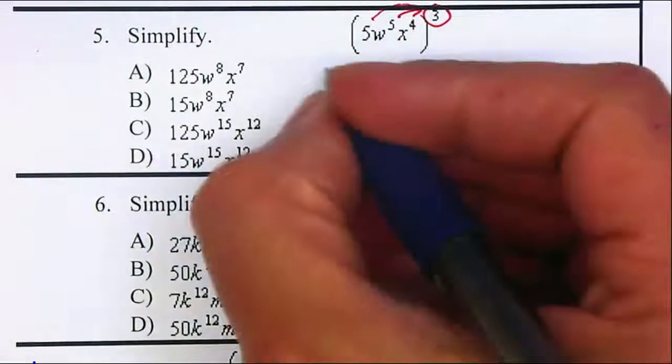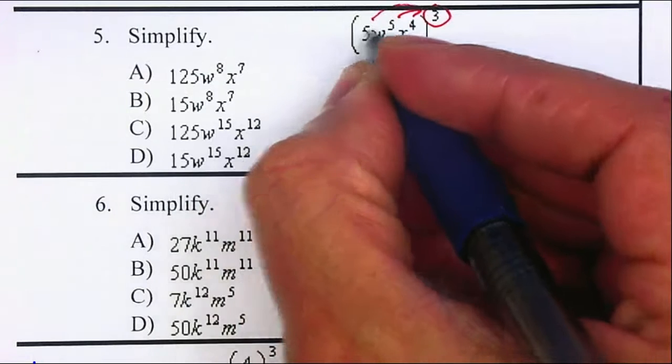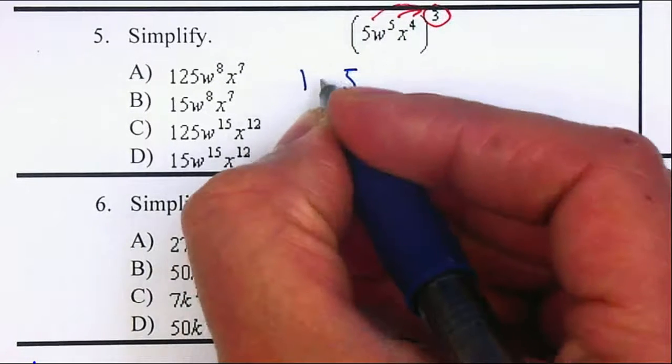And we have 5 to the 3rd power, which is 5 times 5 times 5, which is 125.